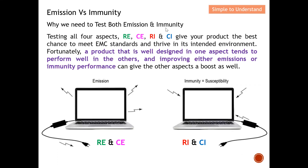Why do we need to test both emission and immunity? In Europe, we need to test both emission and immunity. In the US, the focus is mainly on emission. For now, let's focus on the CE standard. Testing all four aspects — radiated emission (RE), conducted emission (CE), radiated immunity (RI), and conducted immunity (CI) — gives your product the best chance to meet the EMC standard, ensuring a newly introduced product can work in its intended environment.